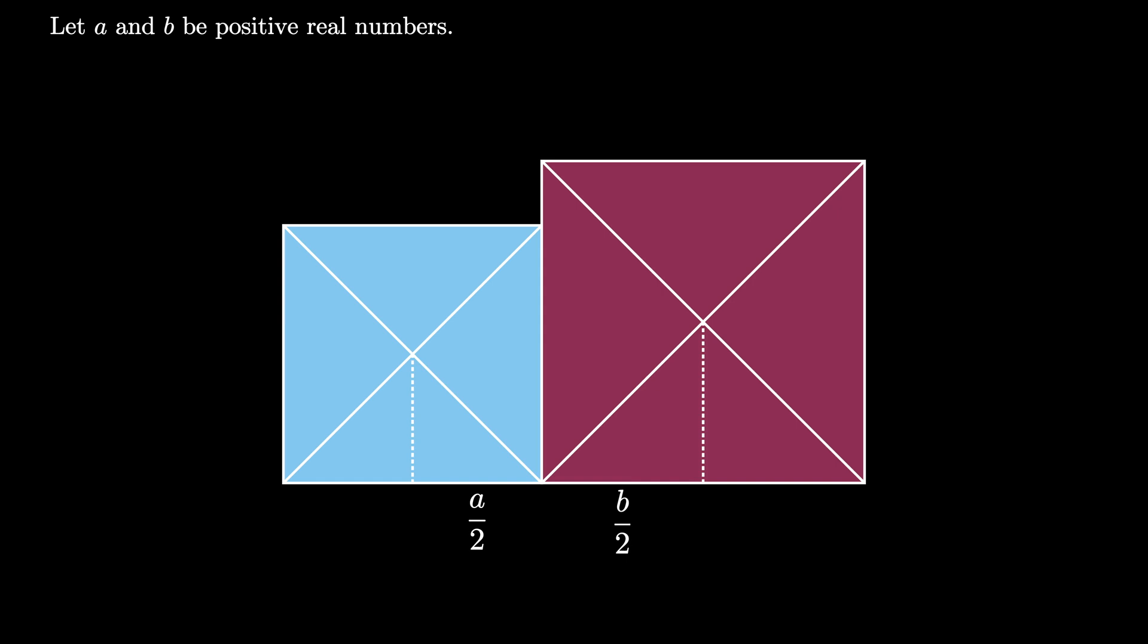This process has created isosceles right triangles in either square, one of them with a side length of A over 2 and one of them with the side length of B over 2.